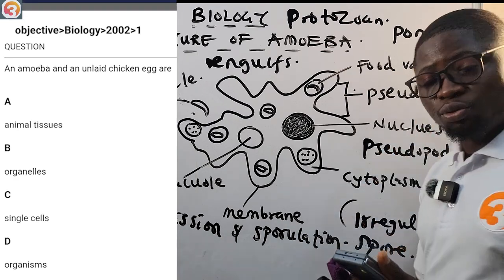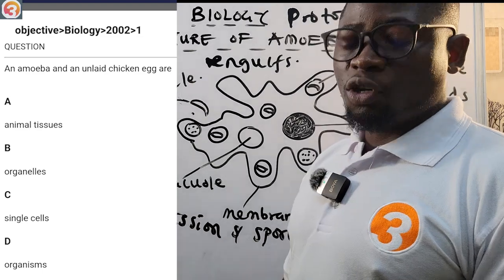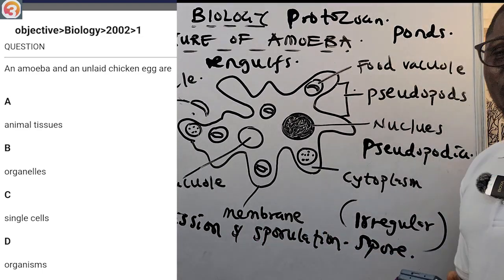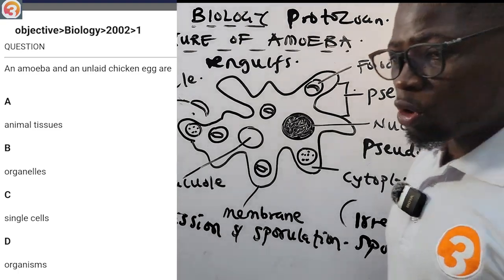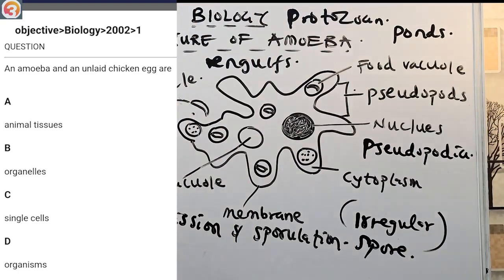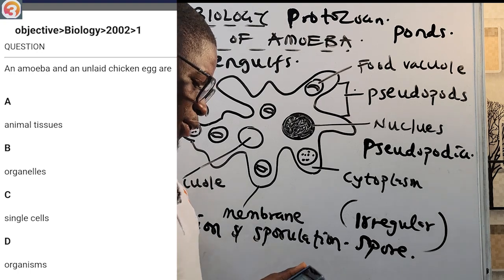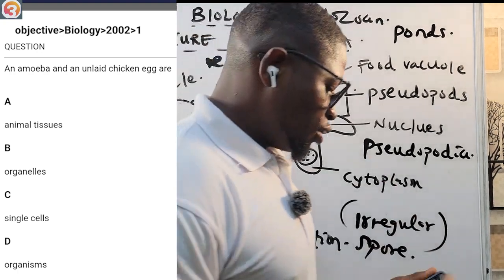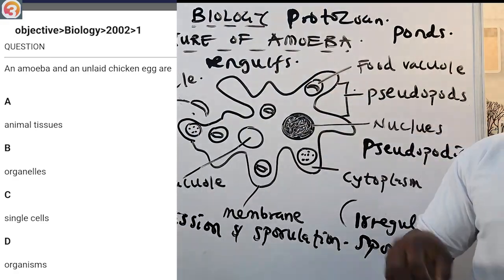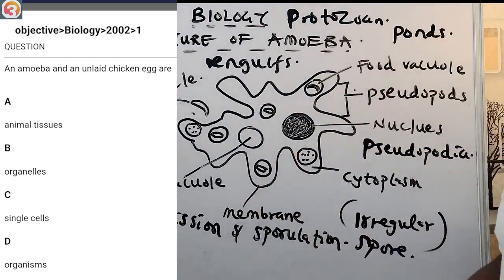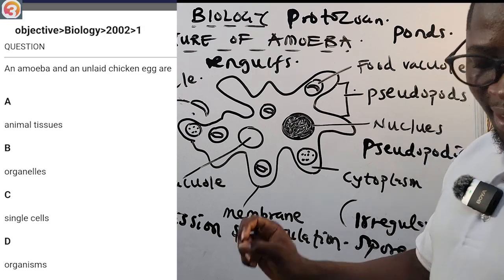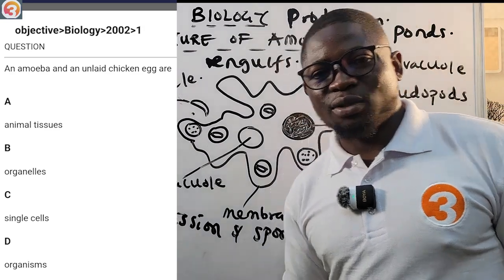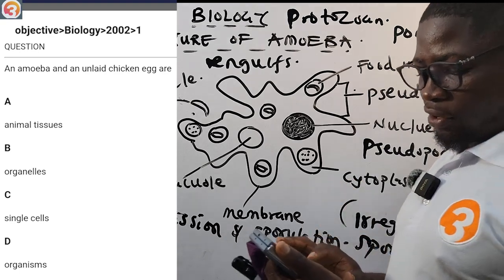2002 question number 1: 'An amoeba and an unlaid chicken egg are...' The yolk of an unlaid chicken egg is unicellular, just as the amoeba is unicellular and single, free-living. The options are: A) animal tissues, B) organelles, C) single cells, D) organisms. The correct answer is C — single cells, single and free-living.